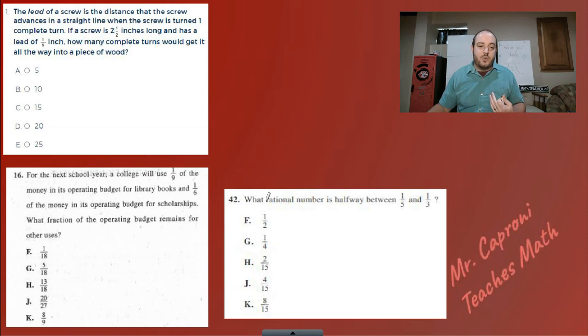And this last one - what rational number is halfway between 1/5 and 1/3? Well, in order to do that, you can go back to our common denominator answer and we can say, all right, 1/5 is actually going to be the same as - let's see, the number to use here, 5 and 3 would be 15. So that would be 3/15 and 5/15. Well, if I have 3 and 5, what number is between those? 4. So your answer for 42 would be J, 4/15. So again, here are the three answers squared off for you. I hope you guys were just as successful as I was in getting them.